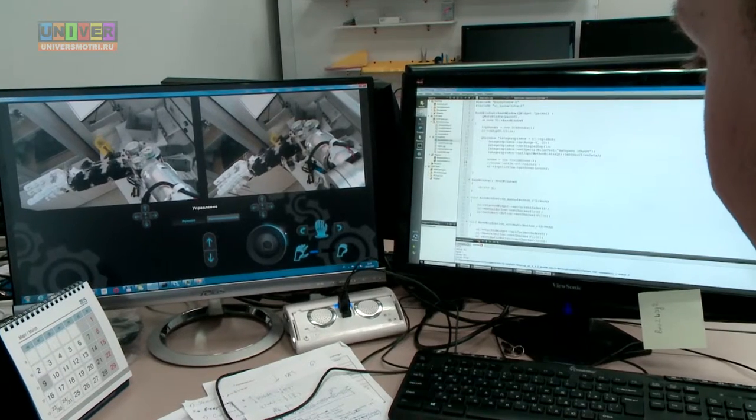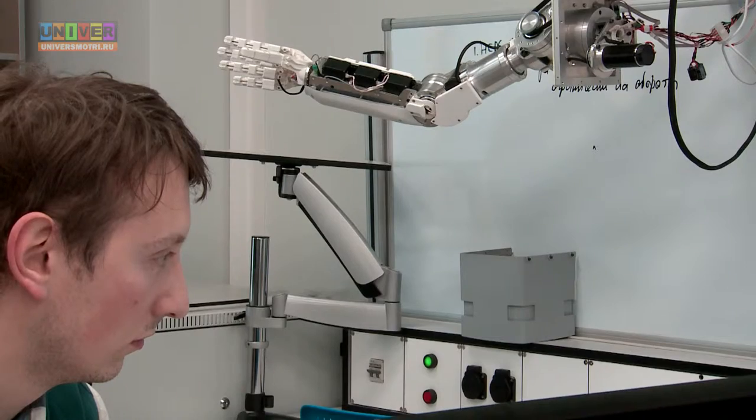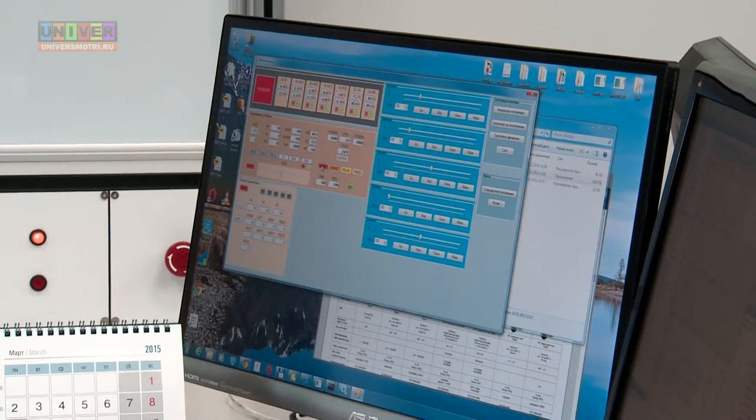In the future, the robot will operate in space. Therefore, it must have excellent characteristics even in complete blindness.